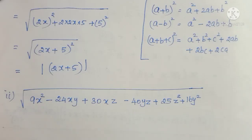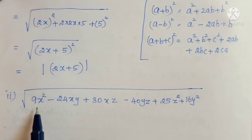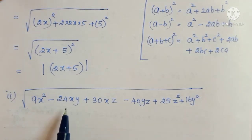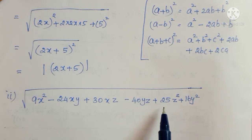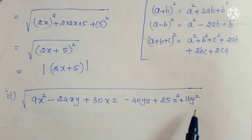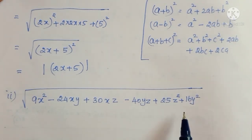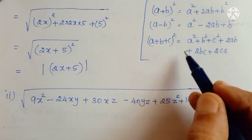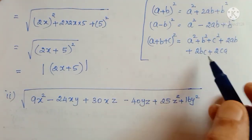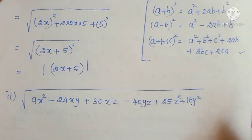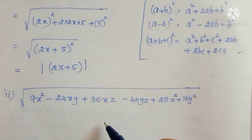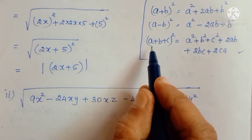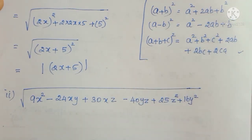Now we will see the second subdivision. See the question: square root of 9x squared minus 24xy plus 30xz minus 40yz plus 25z squared plus 16y squared. So this long expression follows the a plus b plus c, whole squared formula. On the right side of the formula, we have to rearrange or reform this expression into the a plus b plus c, whole squared model.